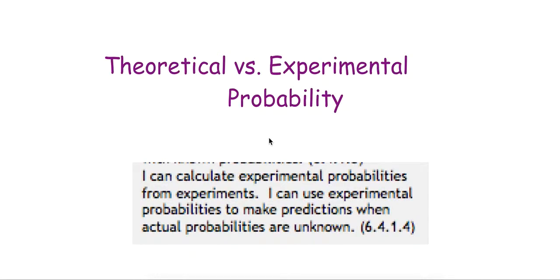Theoretical versus experimental probability. The standard today is I can calculate experimental probabilities from experiments and I can use experimental probabilities to make predictions when actual probabilities are unknown.